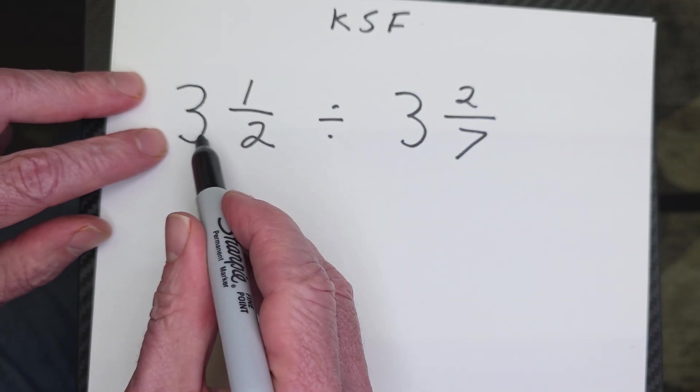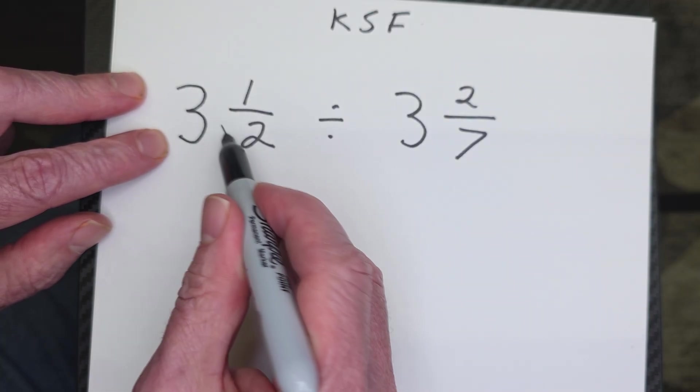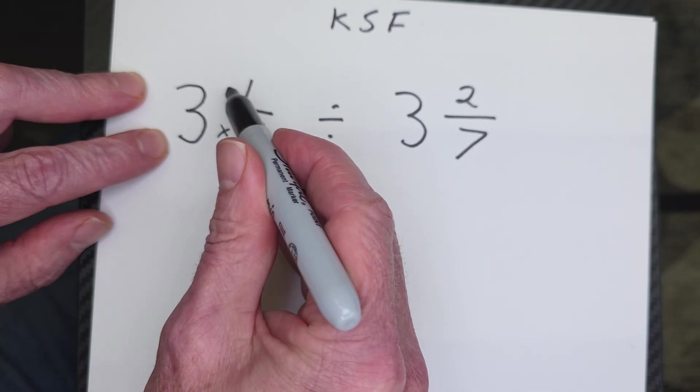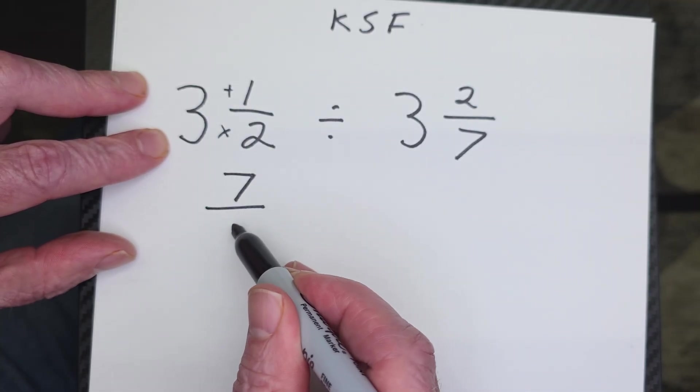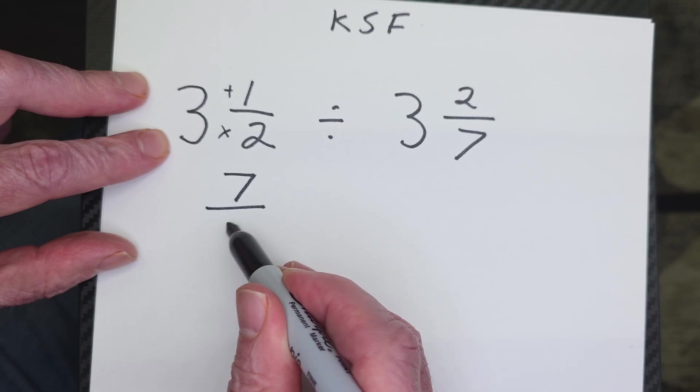So we take 2 times 3 equals 6, and then 6 plus 1 equals 7. So I put 7 here, keep the same denominator, which is 2, and then divide.